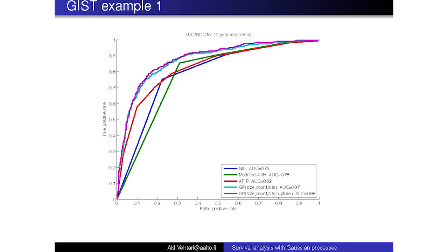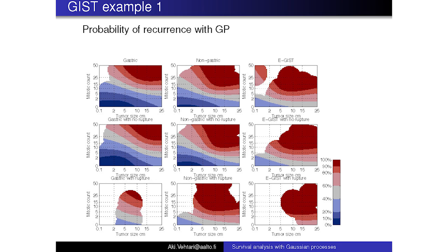Here's the ROC curve showing that the three bottom lines are the previous rule-based approaches and the two upper lines are the GP-based models — with just the difference that one of them has extra covariates. This shows a clear improvement in prediction accuracy. Instead of just this kind of graph, we could have an online service giving the more exact probability for each patient. This was published in Lancet Oncology.